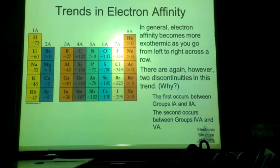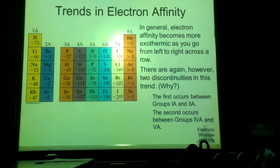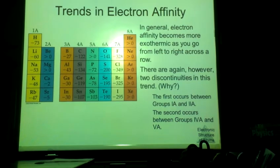Hi guys, I promised you one slide, so here is our one slide. We said that electron affinity was the addition of an electron to the atom. Now electron affinity becomes more exothermic, meaning that it will release more energy as we move from left to right across a row or across a period.